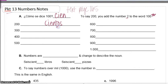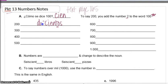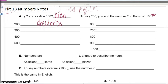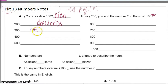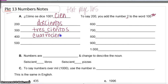So you have to add -tos. Two hundred is doscientos. Three then follows the same pattern: trescientos. And that's all one word. Try four — cuatrocientos.